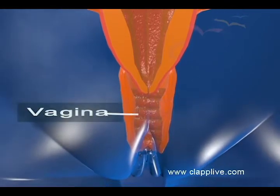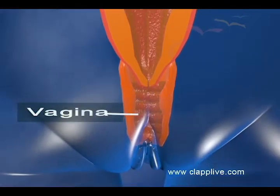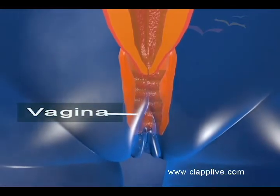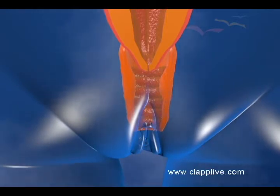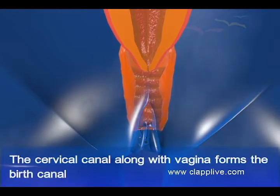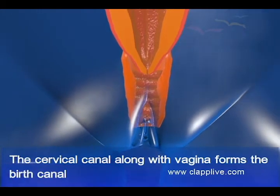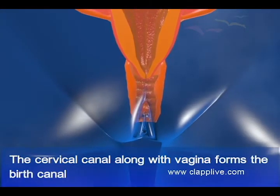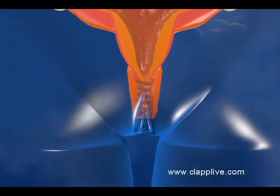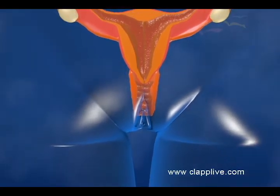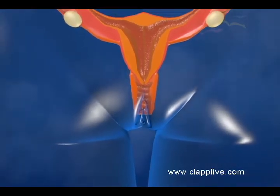Vagina is an elastic muscular tube, about 7.5 cm long, that connects the cervix of the uterus to the exterior of the body by the vaginal opening. The cervical canal along with the vagina forms the birth canal. During menstruation, the menstrual flow exits the body via the vagina.